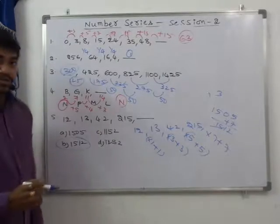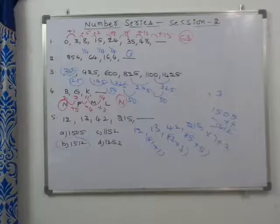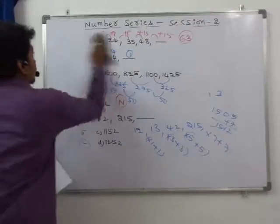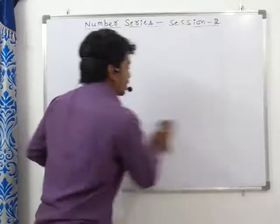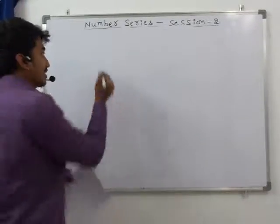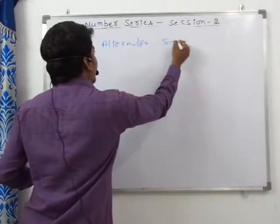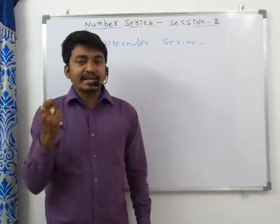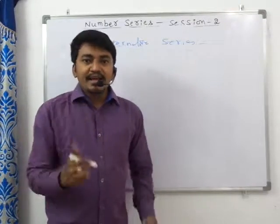Next, let us see two more questions based on combination series, also called alternative series. In this type, two different series are mixed together — for example, a square series combined with a prime number series, or a cube series with a prime number series.